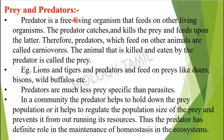In the predator-prey relationship, the predator is a free-living organism that feeds on other living organisms. The predator catches, kills, and feeds upon the prey. Predators which feed on other animals are called carnivores. The animal that is killed and eaten by the predator is called prey. For example, lions and tigers are predators.